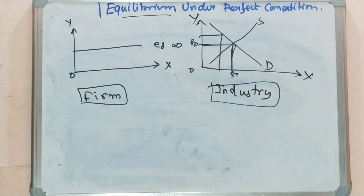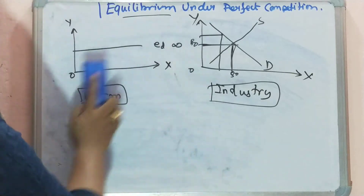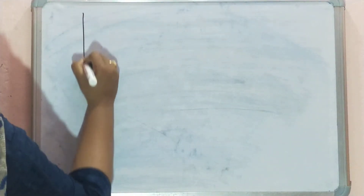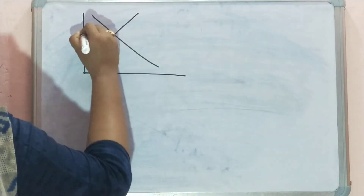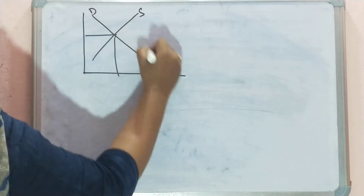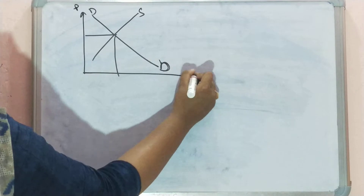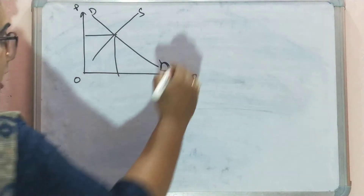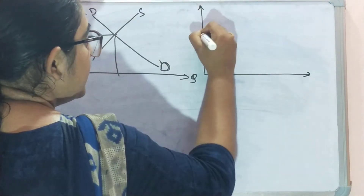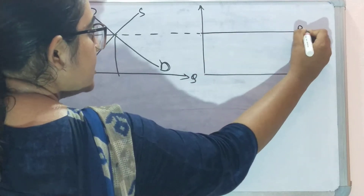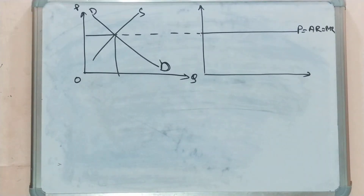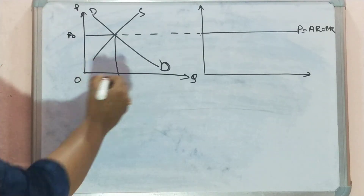The price is given to all firms as determined in the industry by the forces of market demand and market supply. Drawing the market demand and supply diagram, we get an equilibrium position at price P0 and quantity Q0. From this equilibrium, we can see that P equals AR equals MR — the MR line is horizontal, and AR is also a horizontal line equal to P.